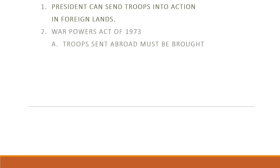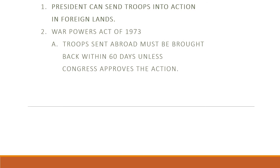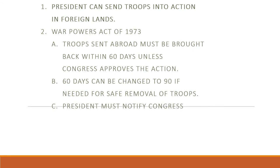The War Powers Act was passed in 1973 at the end of the Vietnam War. It says if you send troops abroad, you must bring them back within 60 days unless Congress approves the action. The president can strike first, then Congress has time to approve. Most politicians — Democrats and Republicans — vote in support of military action. The president must notify Congress within 48 hours of sending troops or launching missile strikes and give an explanation. With the Iran strikes, there wasn't a very good explanation given.